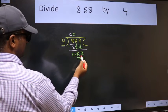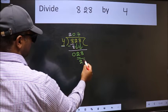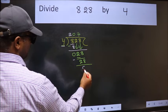Now, 28. When do we get 28 in the 4 table? 4 times 7 is 28. Now, we should subtract. We get 0.